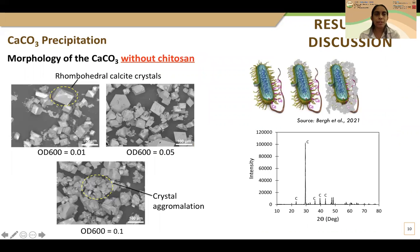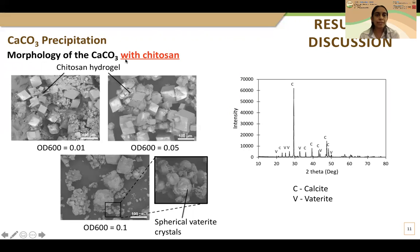Looking at crystal morphology — without chitosan, we can clearly see rhombohedral crystals. Under higher cell concentration, smaller-sized but larger-amount crystals are produced because bacteria cells act as nucleation sites, so more bacteria means more nucleation sites and more calcium carbonate without individual crystal growth. With chitosan, we can see the precipitated hydrogel also incorporated with calcium carbonate. In this case, we could obtain both rhombohedral and spherical shaped crystals. According to XRD pattern analysis, we confirmed the precipitate contains both calcite and vaterite types of calcium carbonate.